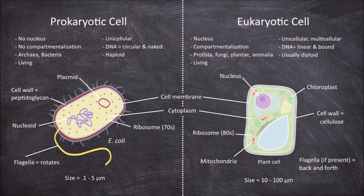The final difference between prokaryotic and eukaryotic cells is their methods for reproduction. Prokaryotic cells reproduce through the process of binary fission, whereas in eukaryotes it mostly occurs through the processes of meiosis and mitosis. Binary fission does occur to a lesser extent in some single-celled eukaryotes such as amoeba.